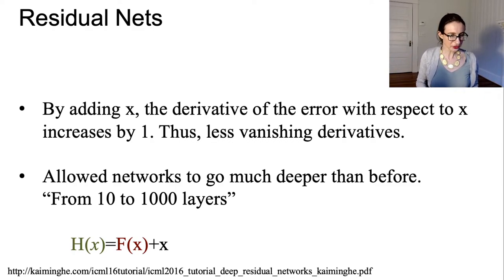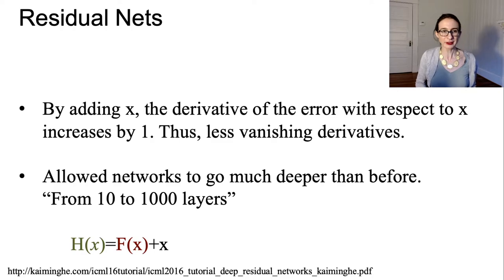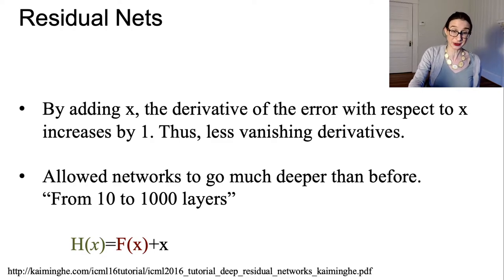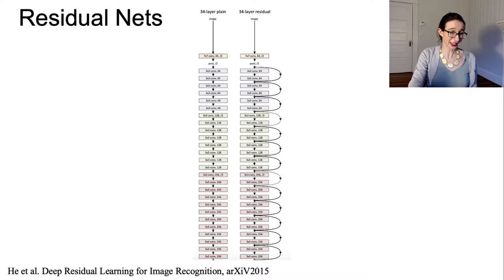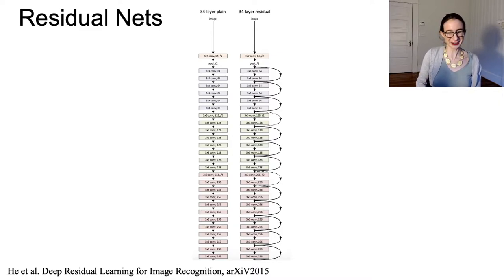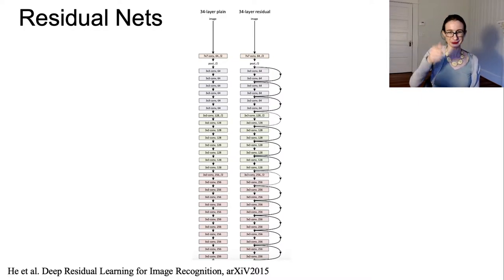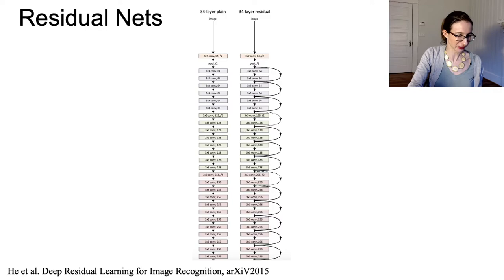This trick apparently allowed neural networks to go much deeper than before. People were reporting that previously they could only get to about 10 layers, and now they could get to a thousand layers — a thousand-layer network. This is an example of a residual network showing the residual connections.